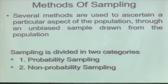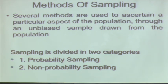Several methods are used to ascertain a particular aspect of the population through an unbiased sample drawn from the population — this is a very strong condition. We have to remove biases when selecting the sample; there should be bias-free selection. Sampling could be of two types: probability sampling and non-probability sampling. Many times I cannot use probability sampling, which is based on statistics, so we have to use non-probability sampling also.